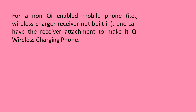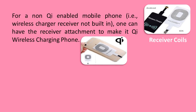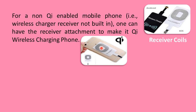For a non-Qi-enabled mobile phone where a wireless charging receiver is not built in, one can attach a receiver to make it a Qi wireless charging phone. The images shown here are receiver coils as adapters for Android and iOS. As shown in the image, the receiver coil is placed on the back side of the mobile phone so that it picks up the energy and charges the battery.